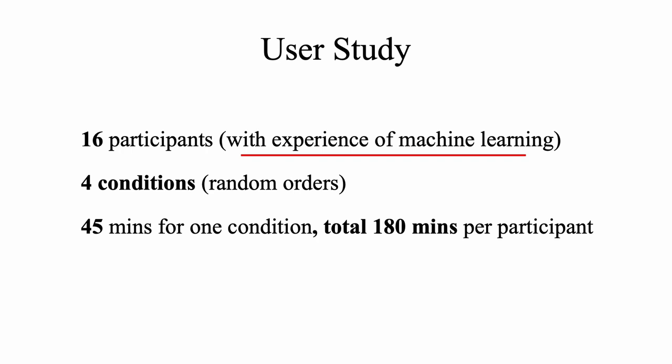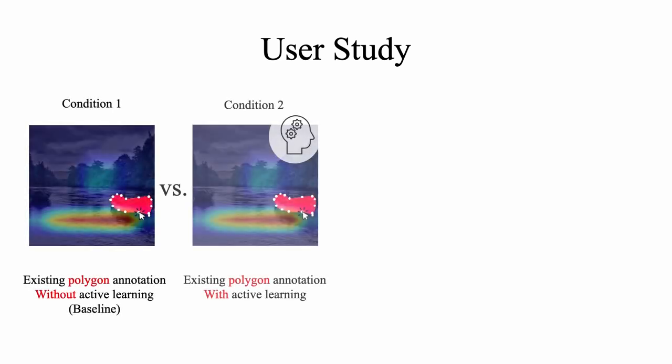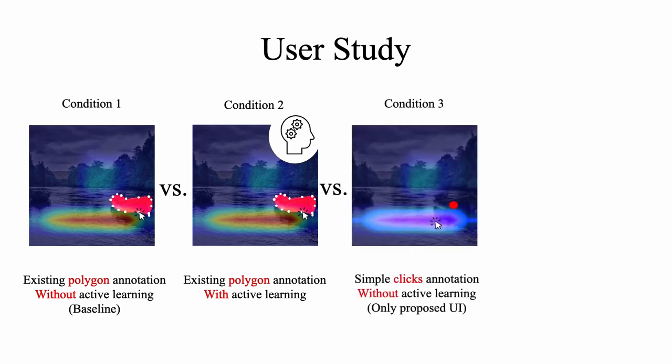The user study consists of four conditions: polygon-based annotation without and with proposed active learning mechanism, simple clicks-based annotation without and with proposed active learning mechanism.